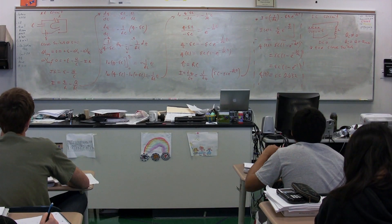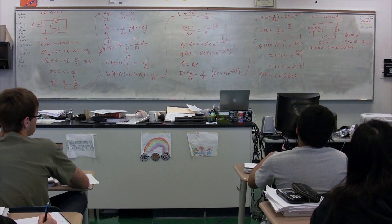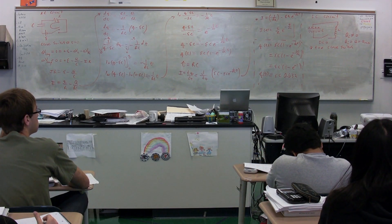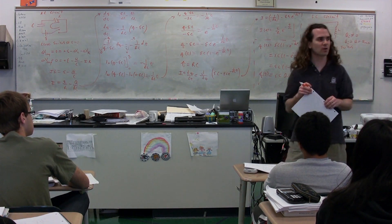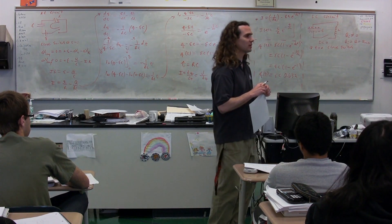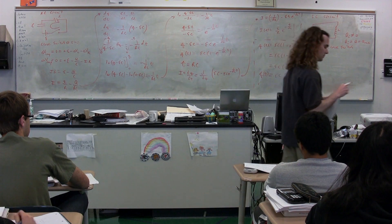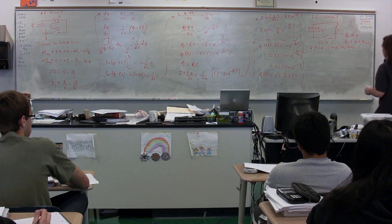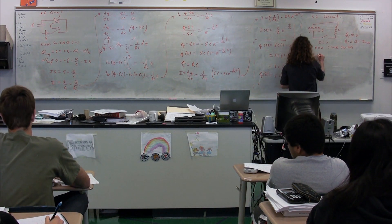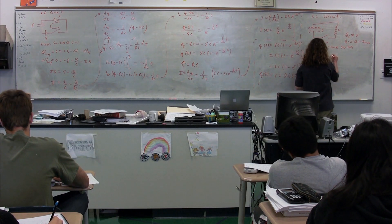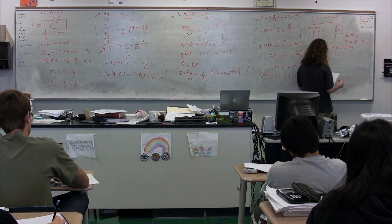We start with, actually, in order to figure out the charge and the current, believe it or not, we don't start with a loop in this particular case. We start with total energy. The total energy is going to be equal to the energy stored on the capacitor plus the energy stored on the inductor.